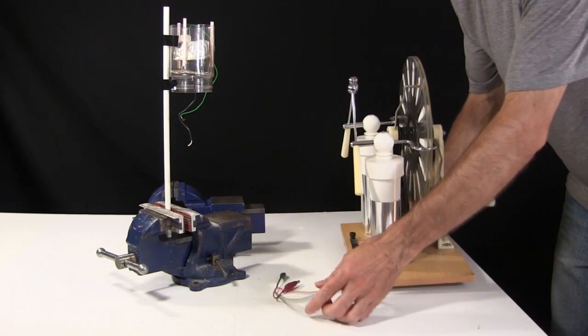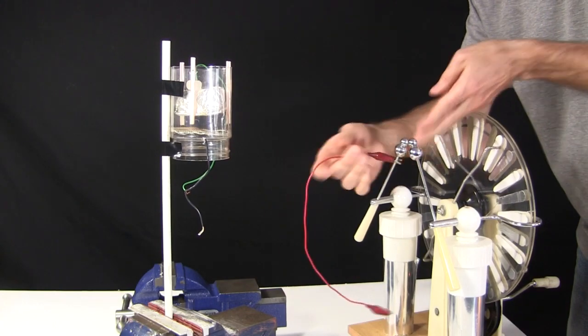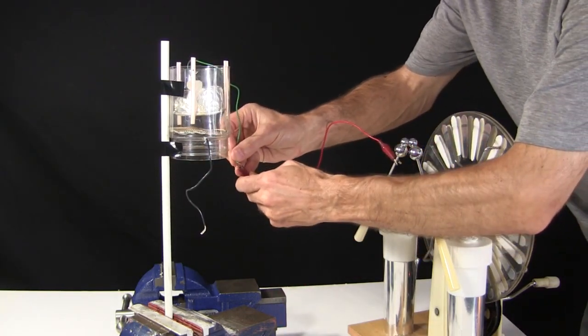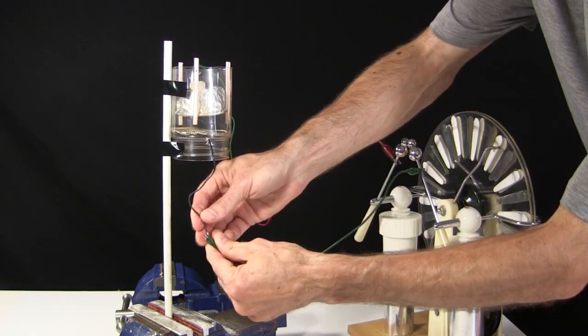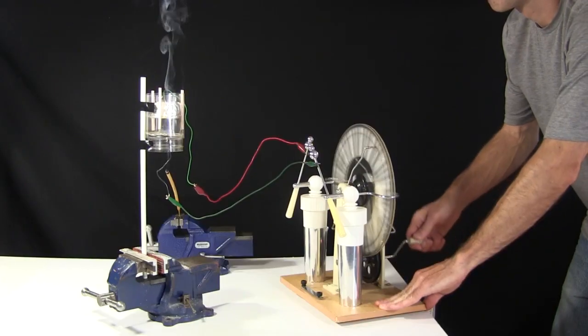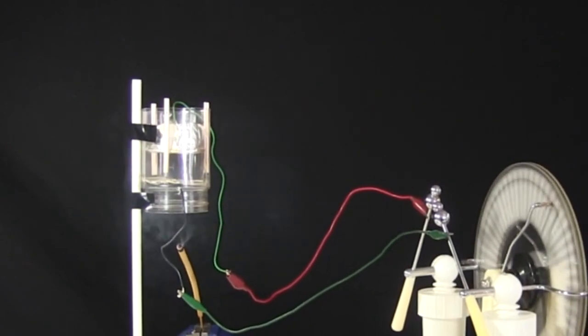But I bring out my commercially made Wimshurst machine. Using wires with alligator clips on the ends, I connect one side of the spark gap to the foil cylinder, with no cross. And the other side of the spark gap to the mesh. This also puts out flat DC. And as you can see, it works quite well.